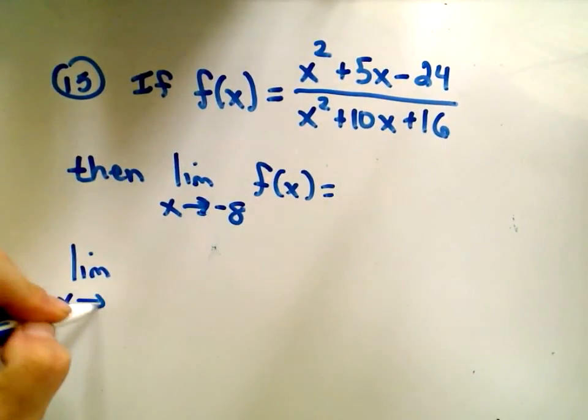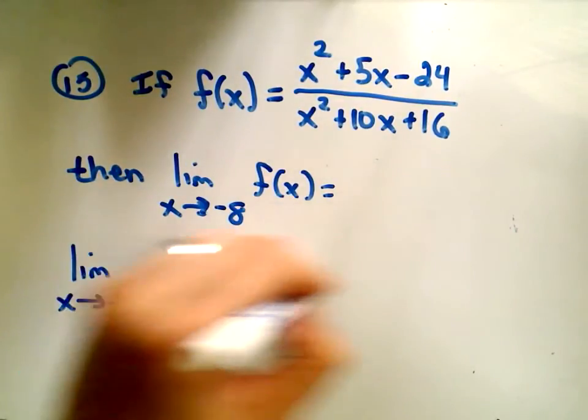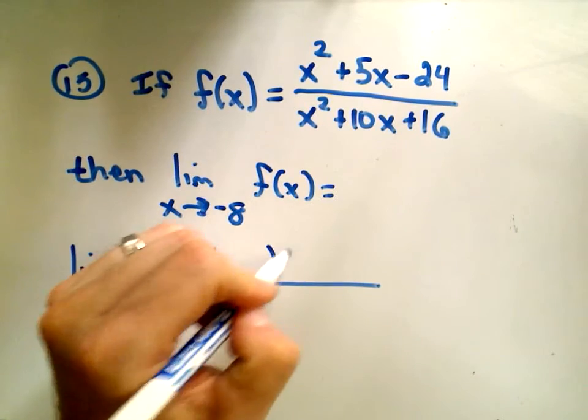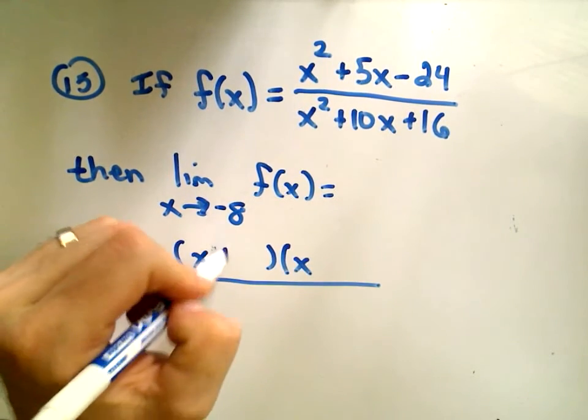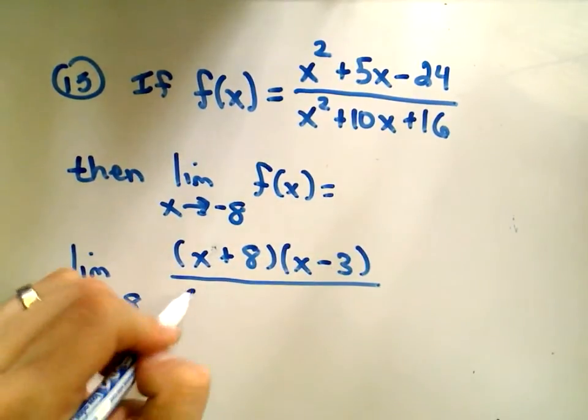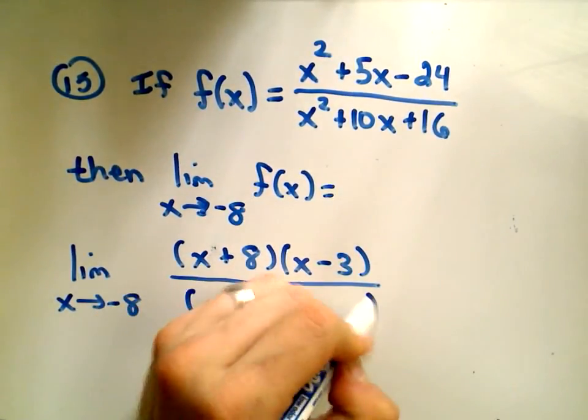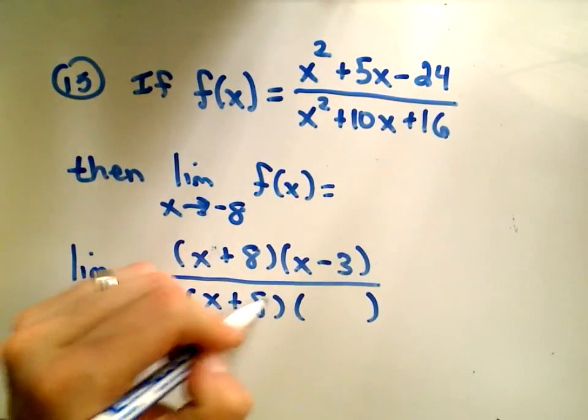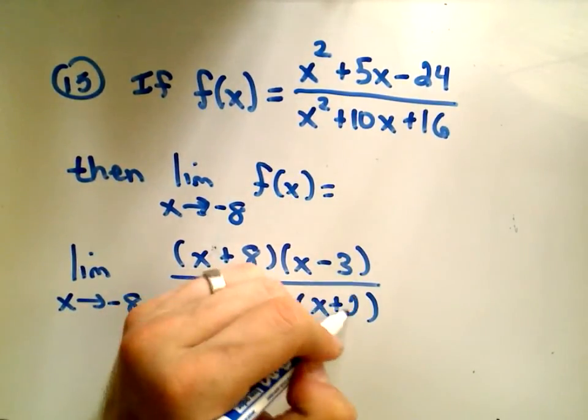We have the limit as x approaches negative 8. x squared plus 5x minus 24, I believe that's going to factor as x plus 8 and then x minus 3. If we factor the denominator, that's also going to factor as x plus 8 and x plus 2.